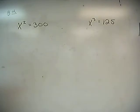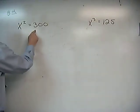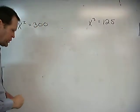Go ahead and pause the video if you want to work these out. x squared is equal to 300, x cubed is equal to 125.